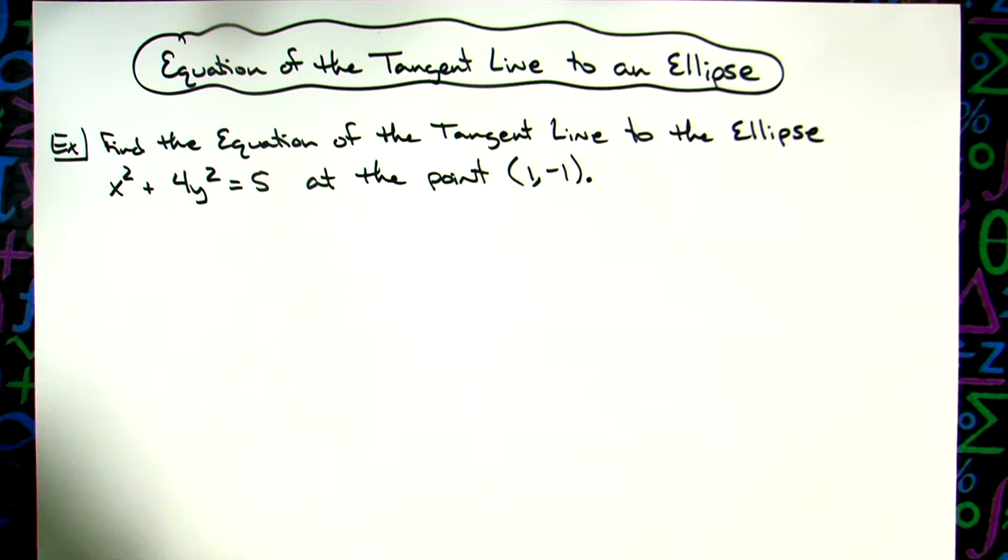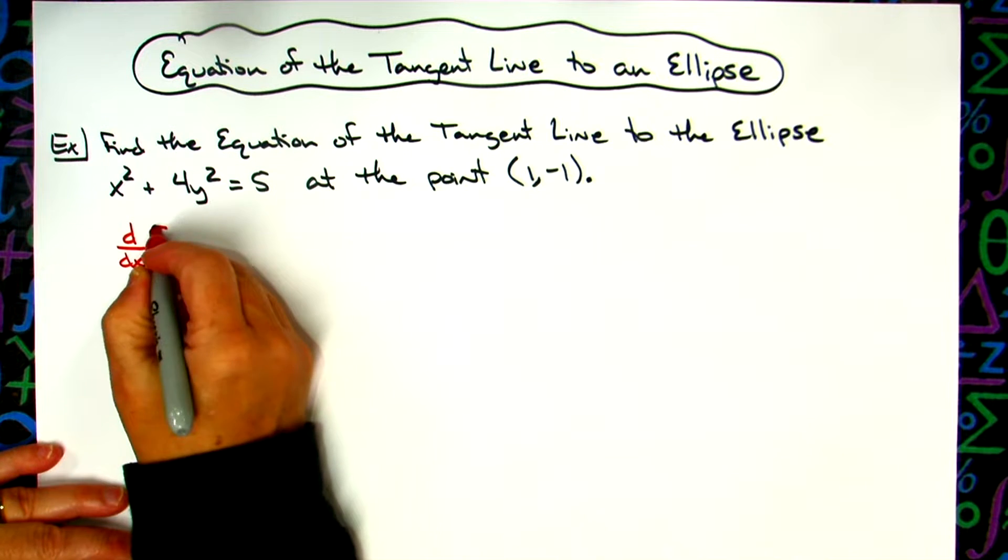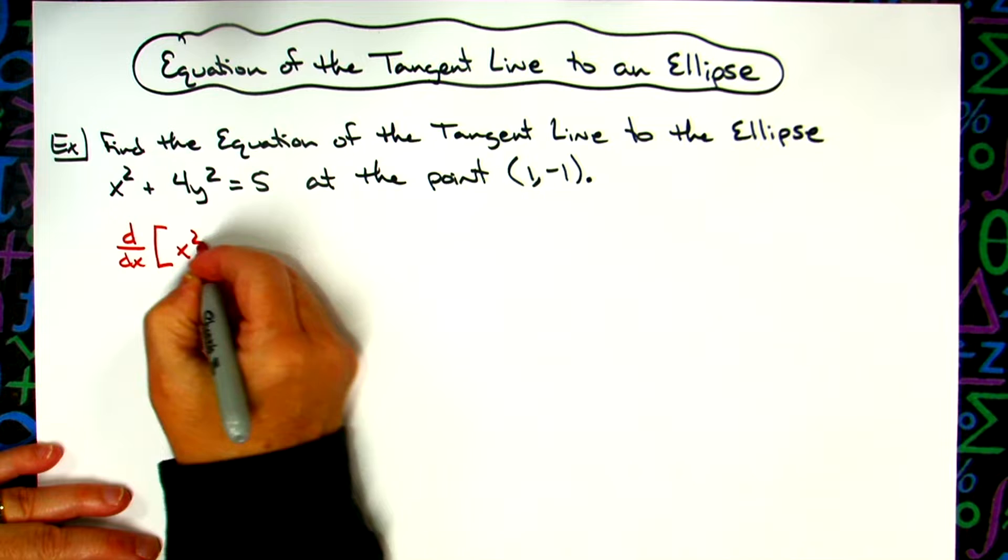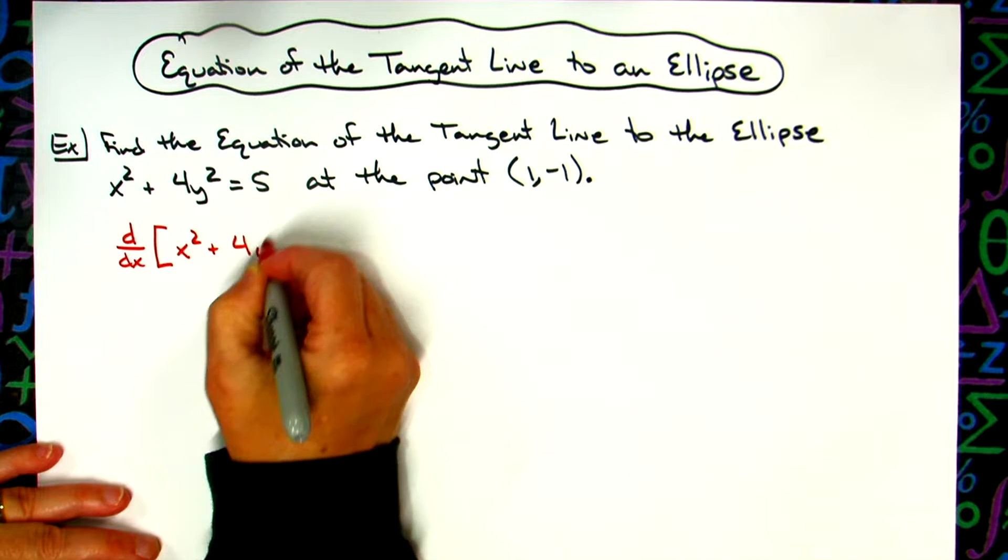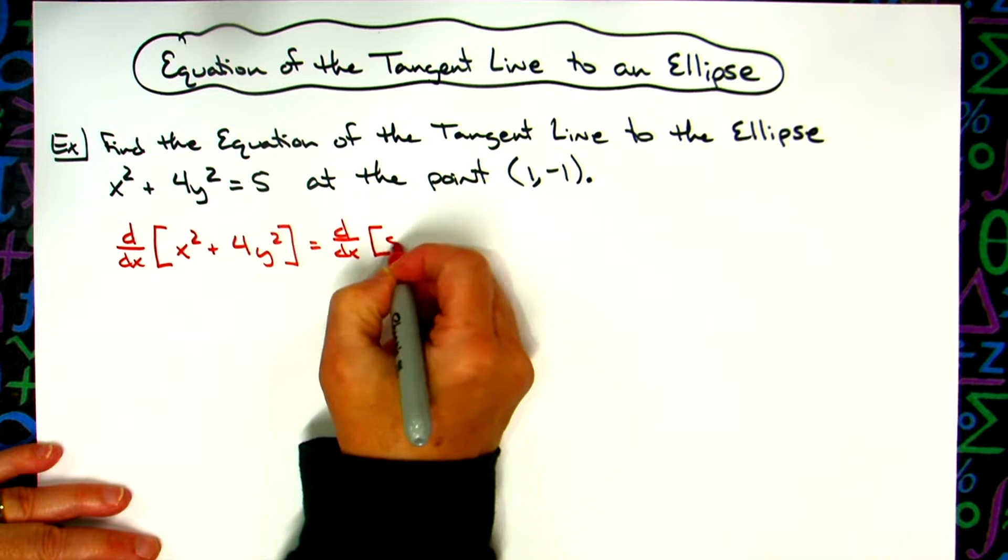The first thing we're going to need to do is calculate the derivative. We're going to do d/dx of the left hand side, x squared plus 4y squared, and then take the derivative of the right hand side, which is 5.